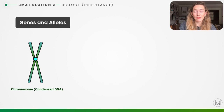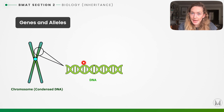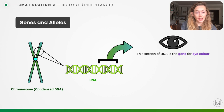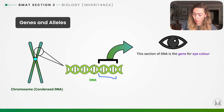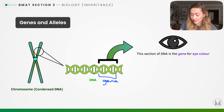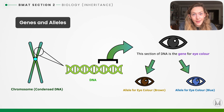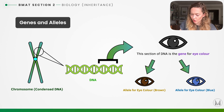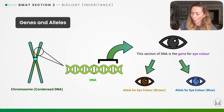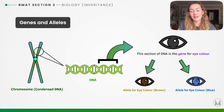Here we can see a chromosome, which is condensed DNA. Zooming in to a certain section of that DNA, we have what we call a gene — here the gene for eye colour. We then look at what allele we have for that gene: for eye colour we might have a brown, dominant allele, or we might have the allele for blue, a recessive allele.